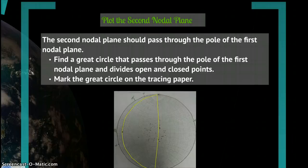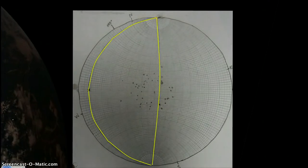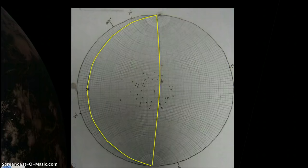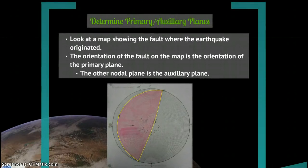Now you'll trace that great circle on the tracing paper and color in the areas with closed circles. So here I've traced that second plane, and it goes through my X. And here I've colored in the closed points in pink.